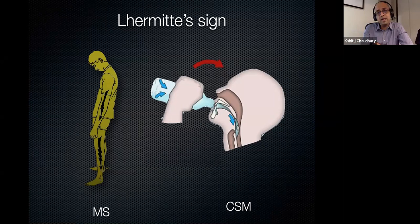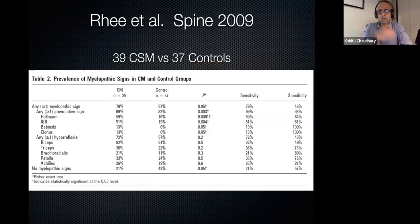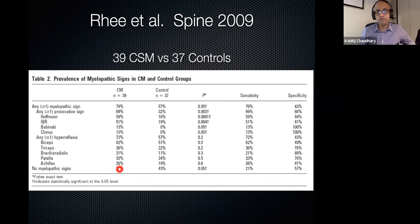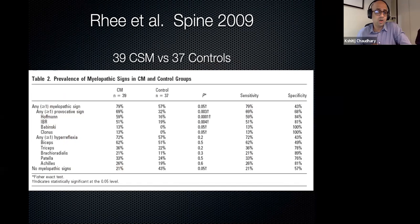This is a very interesting paper by John Rhee published in Spine 2009. They compared 39 proven cervical myelopathy patients with 37 normal people with normal MRIs. Notably, about 20% of cervical myelopathy patients had no myelopathy signs at all — one in five patients will not have any hyperreflexia, clonus, Babinski, or Hoffman. This means not every patient with cervical myelopathy will present with the full spectrum of signs.